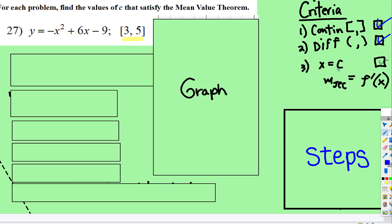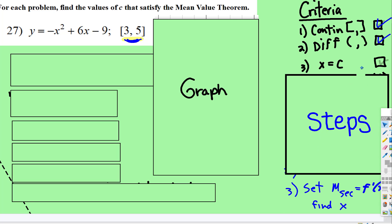Now what you're going to check for is whether there's a point between here and here where the secant line could be parallel to the tangent line. So these are the steps.